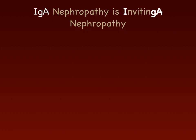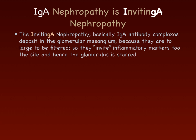IgA nephropathy can be thought of as 'inviting' a nephropathy. IgA antibody complexes that form in response to an infection are big and bulky. When the glomerulus tries to filter them, it can't. Scarring occurs, the IgA antibody-antigen complexes deposit in the mesangium, and inflammatory cells are recruited to the site, exacerbating the damage. Although deposits occur in the mesangium — which sounds like nephrotic syndrome — because the process is inviting inflammatory cells and damaging the glomerulus, it is actually a nephritic syndrome.